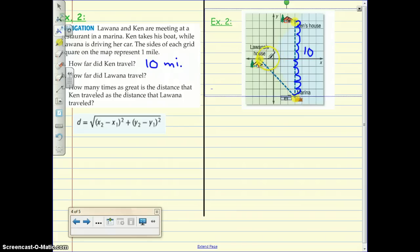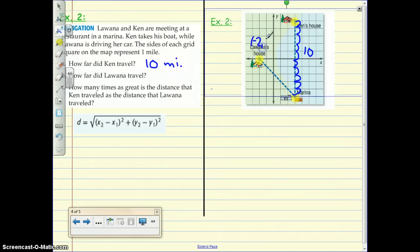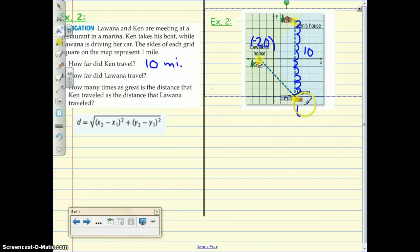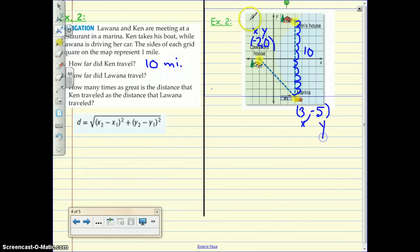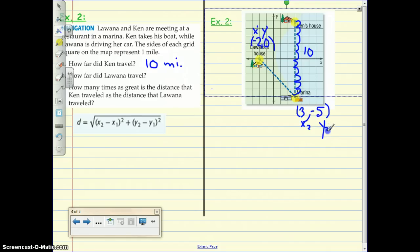So this point is negative 2, 0. And this point is 1, 2, 3. Negative 1, 2, 3, 4, 5. So my first job would always be to find those coordinates. Then I'd label them as x and y. And then I'd label them as the first point and our second point.